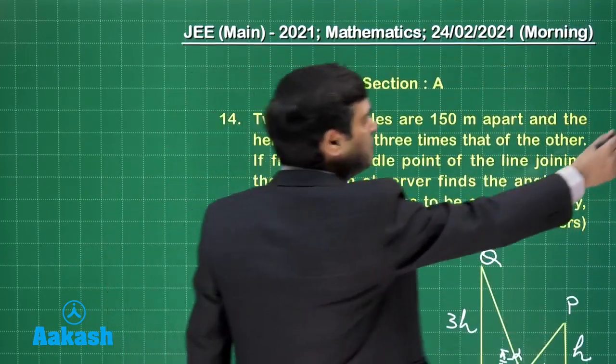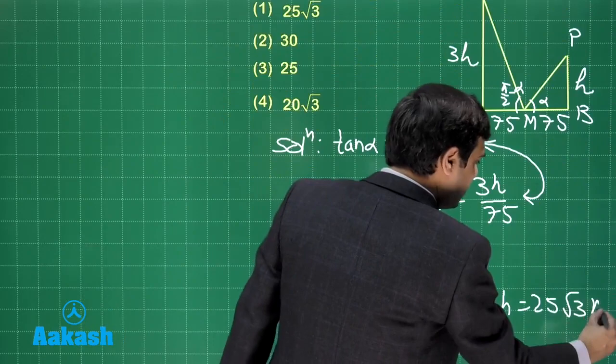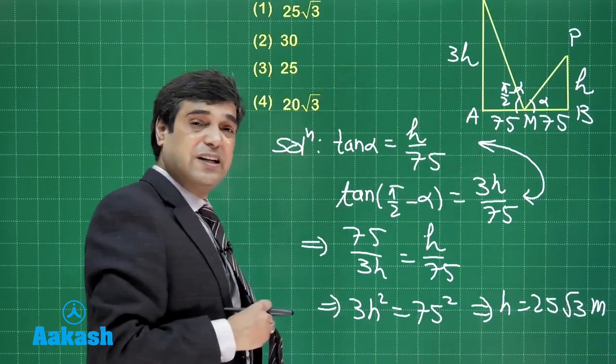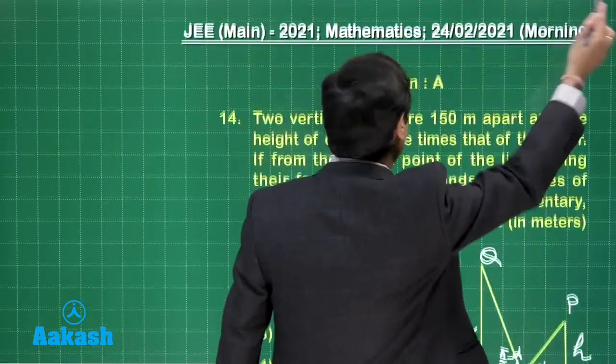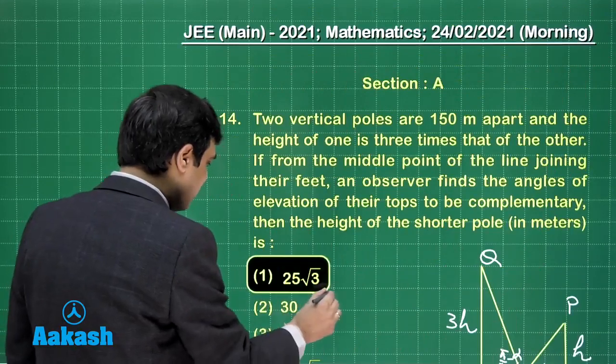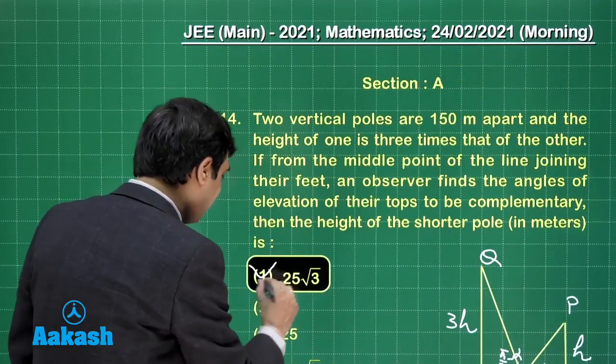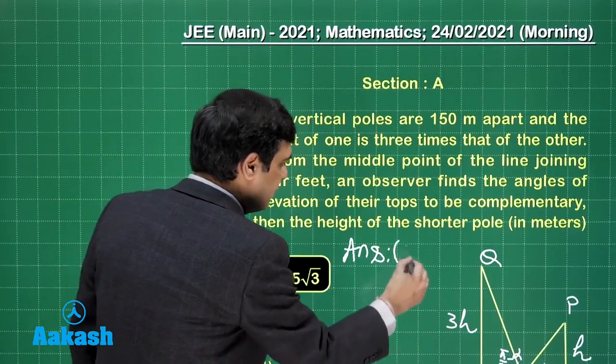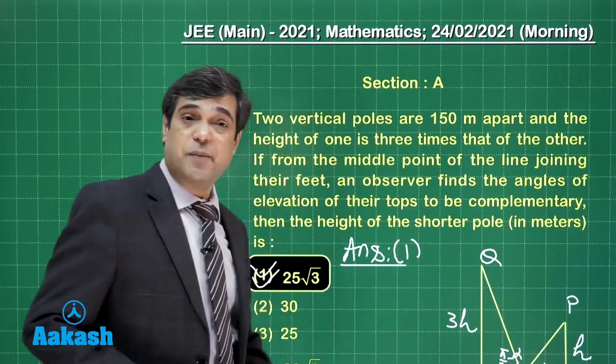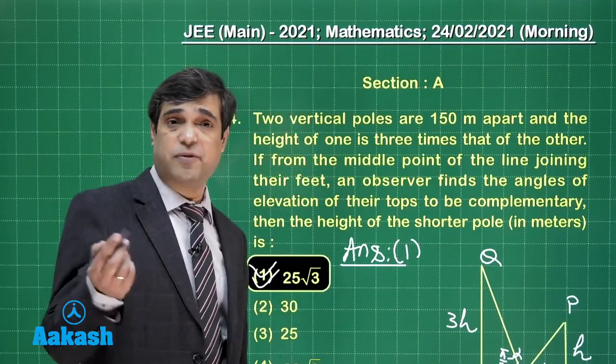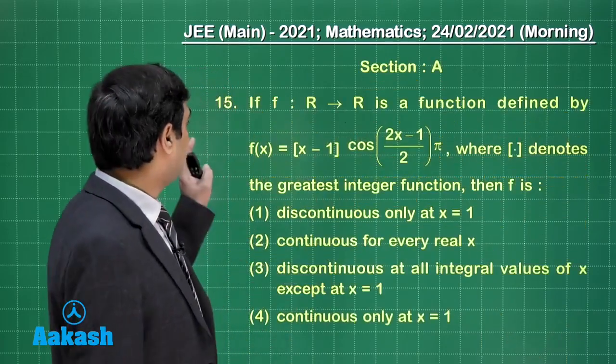So this gives me 3h squared is equal to 75 squared, or h is equal to 25 root 3. Whatever unit is given to us, it was meters. So let's write here meters. So I am sure this question is clear. Let's check out from the given options - 25 root 3, that is option number 1 is the correct answer. I am sure this question is also clear, simple from height and distance.